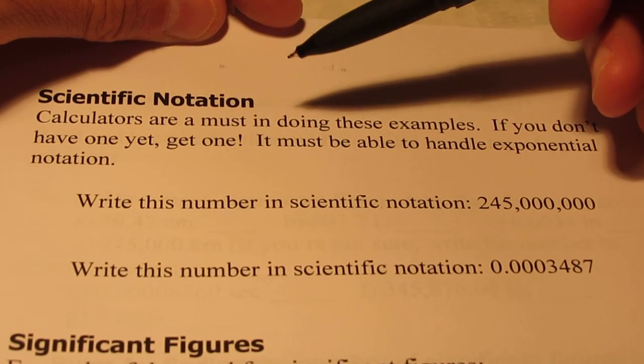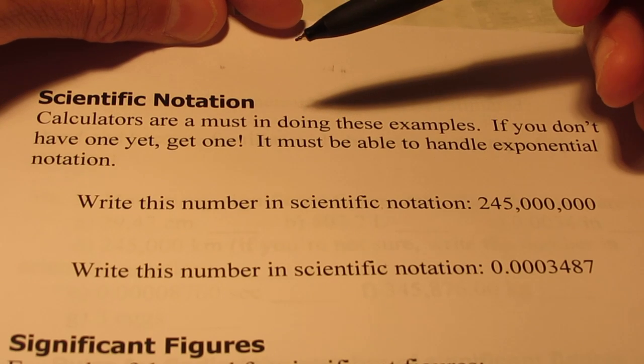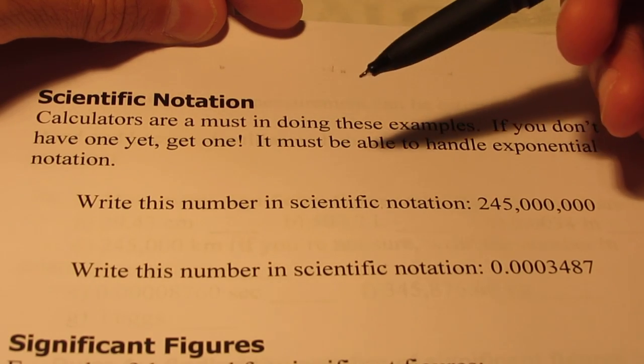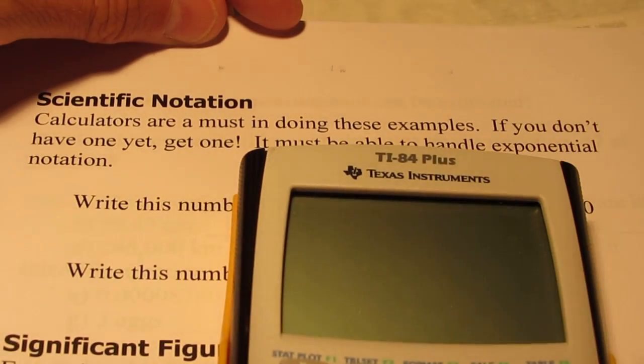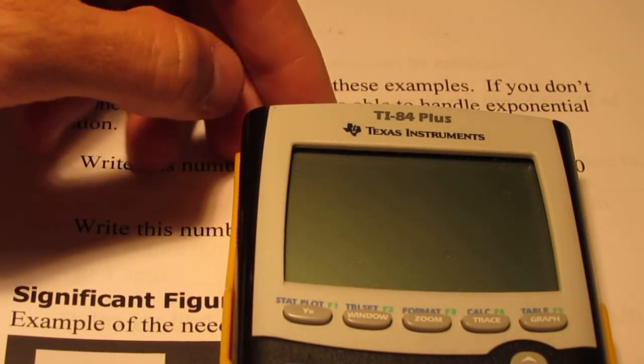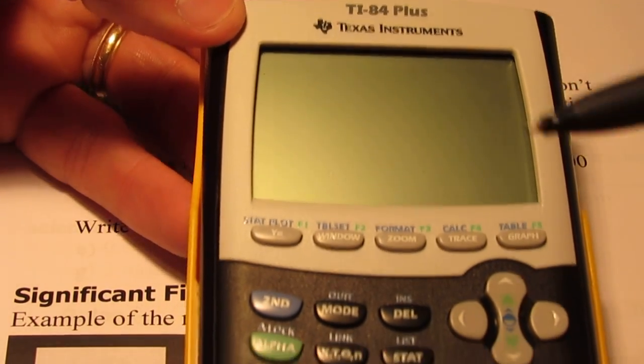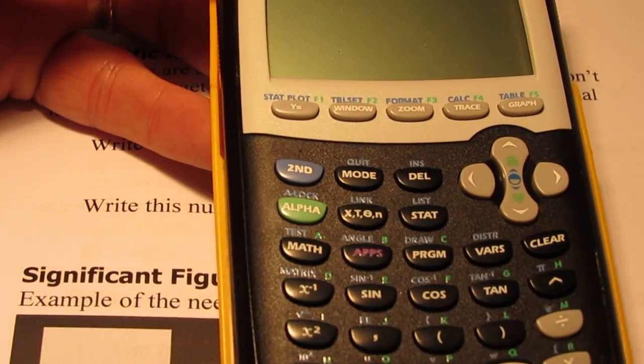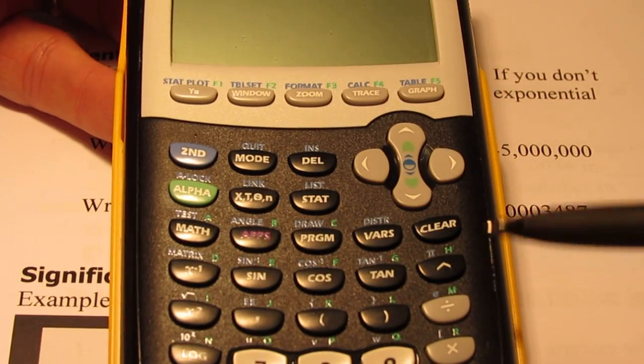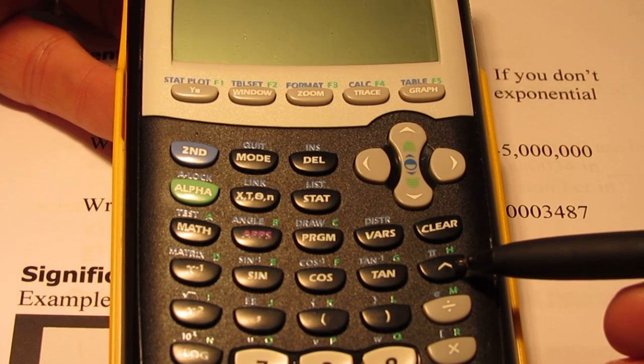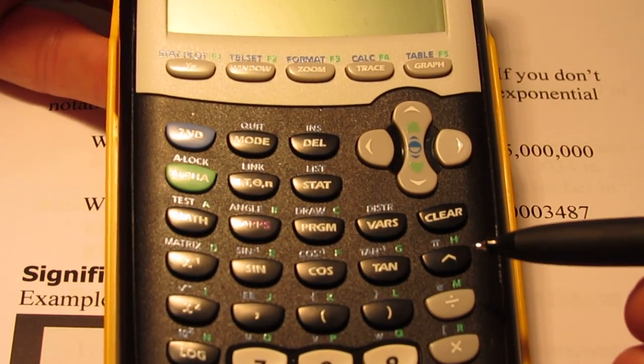First of all I need to mention, make sure you guys get your calculator soon. You'll need them for tonight's homework. If you don't have one, get one. It must be able to handle exponential notation. Now, the one that I'll be using today happens to be a TI-84, but you don't have to get one that's this nice. You'll notice it has a couple of buttons that we'll be using that are pretty important. I call this the carrot key right here. It sort of looks like the rooftop of a house. We'll be using that quite a bit.